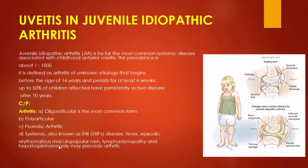Uveitis in juvenile idiopathic arthritis (JIA) is by far the most common systemic disease associated with childhood uveitis. The prevalence is about 1 in 1000 children. It is defined as arthritis of unknown etiology beginning in childhood and persisting at least six weeks. Clinically, arthritis may be oligoarticular, polyarticular, psoriatic arthritis, or systemic — called Still's disease — characterized by fever, rash, lymphadenopathy, and hepatosplenomegaly which may precede arthritis.